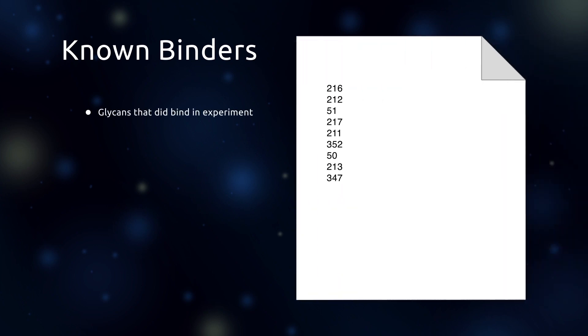Often you will have a list of glycans that you know to be binders based on glycan array screening. Uploading a list of these known binders to the GlySpec tool can allow you to assess how accurate the tool's predictions are. This feature is particularly useful for testing the correctness of a hypothetical MBD. This step is optional — it is fine to skip this step if you just want to see which glycans the tool predicts will bind.